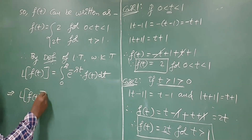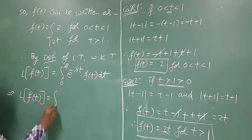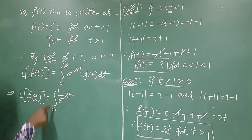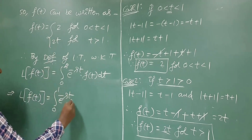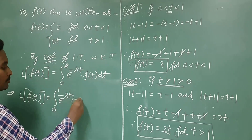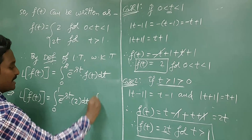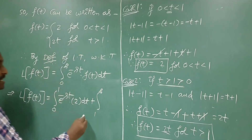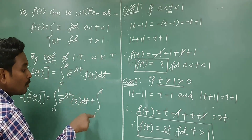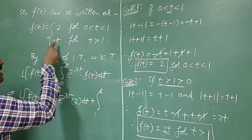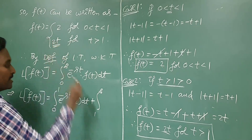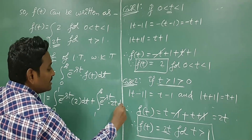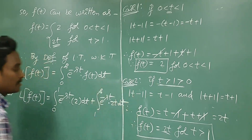So L{f(t)} equals the integral from 0 to 1 of e to the power minus st times 2 dt, plus the integral from 1 to infinity — in this range f(t) is 2t — so e to the power minus st times 2t dt.